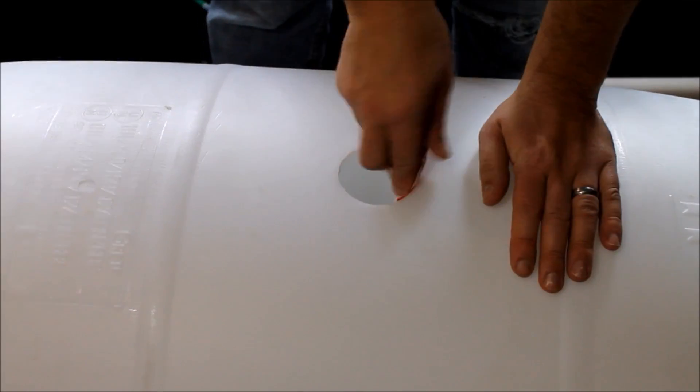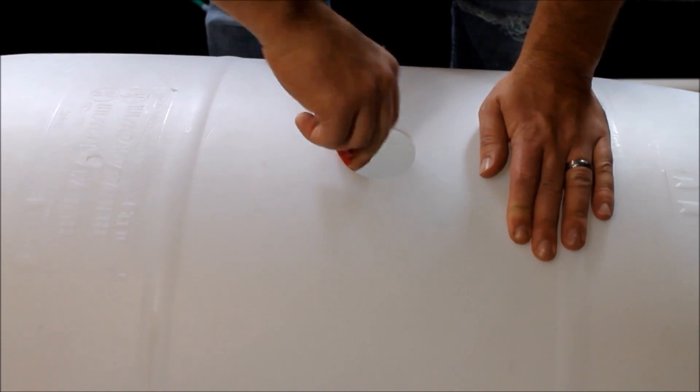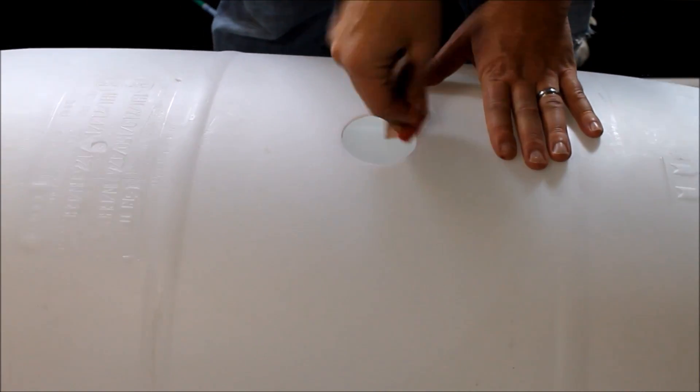Once we've got our hole drilled, I'm just going to take some sandpaper and get any little burrs off. Make sure we have a nice smooth edge to get a good seal from that bulkhead in there.